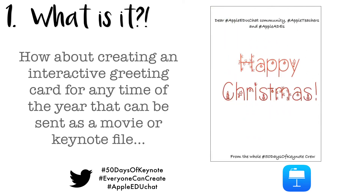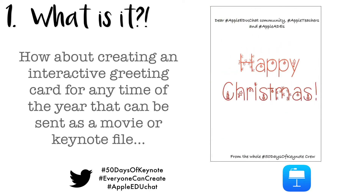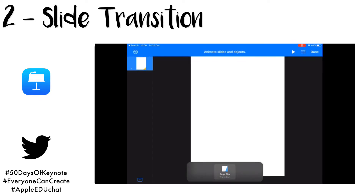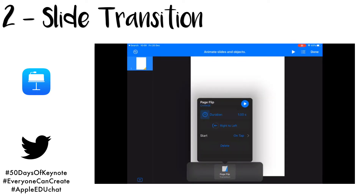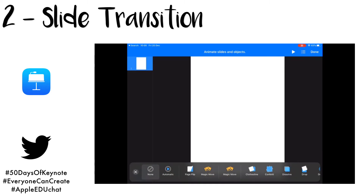And you can add lots of different parts to it, so this is quite a long video with lots of different parts. The first thing I'm telling you about is slide transitions. So if you click on a slide and go to Transitions, you can change it so it actually looks like a card opening up, which is really effective.